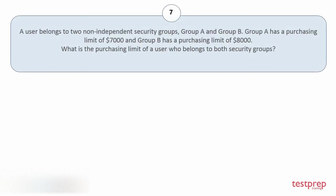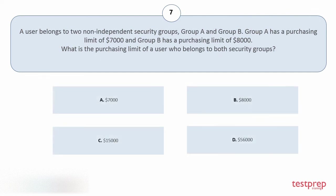Question number 7: A user belongs to two non-independent security groups, Group A and Group B. Group A has a purchasing limit of $7,000 and Group B has a purchasing limit of $8,000. What is the purchasing limit of a user who belongs to both security groups? Your options are: a) $7,000, b) $8,000, c) $15,000, d) $56,000. The correct answer is option b.